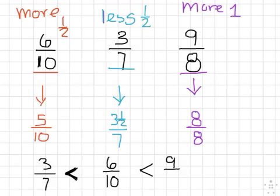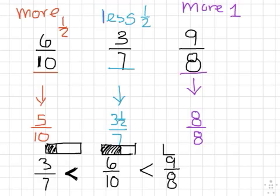So that one is bigger than all of them. If we were drawing this, I could say, okay, here is a whole dollar. Three-sevenths is less than half. I could say six-tenths is more than half, so a little bit more than halfway. And nine-eighths would be a whole dollar and a little bit more. I'll just draw some coins out here. Nine-eighths is more than one whole.